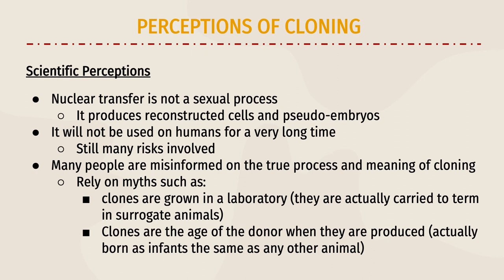The public's negative perception of cloning often comes from the idea that cloning will eventually replace the process of human reproduction. This argument is flawed, as the most common method of cloning — nuclear transfer — is not a sexually reproductive process. Rather, nuclear transfer only produces reconstructed cells to produce pseudo or fake embryos. Nuclear transfer is also not risk-free, so it will not be used on humans until a large number of clones have lived healthy lives. Negative perceptions of cloning can also be due to myths spread by popular media like documentaries and news articles.